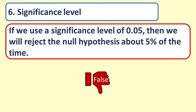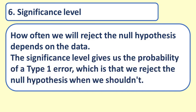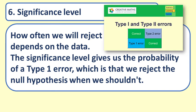False. How often we will reject the null hypothesis depends on the data. The significance level gives us the probability of a type 1 error, which is that we will reject the null hypothesis when we shouldn't. For more on types of errors, see type 1 and type 2 errors.